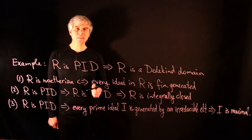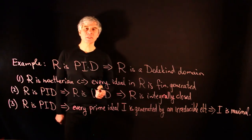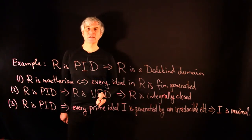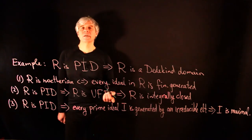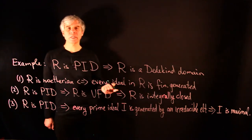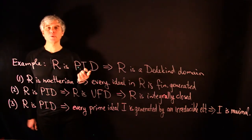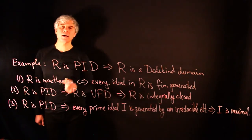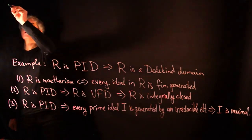In a sense, PIDs are trivial examples of Dedekind domains. Let us mention some non-trivial examples. Only in the next lecture will we be able to prove that these two examples are actually Dedekind domains.